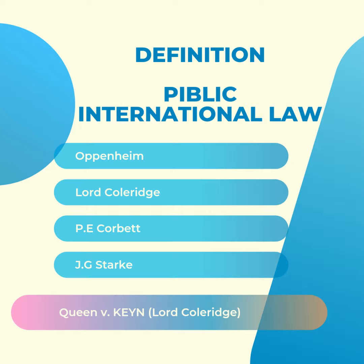Moving to the nature of international law — the theories about the basis of international law. There are two groups: one that says international law is not a true law, and another that says it is a true law. Those who propound that international law is not a true law include John Austin, Hobbes, Holland, Puffendorf, and Bentham. The view that international law is a true law is propounded by the natural school of law. This is an important essay question with respect to public international law and will be dealt with in a different section.